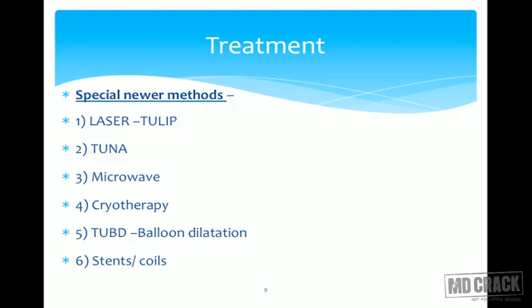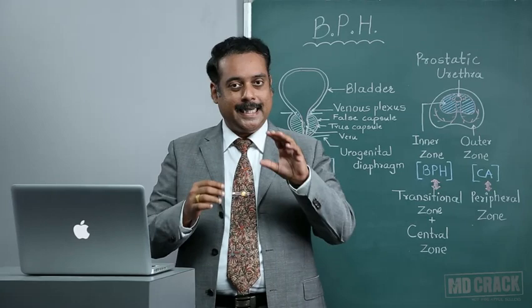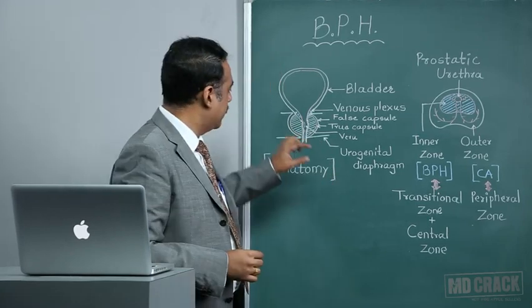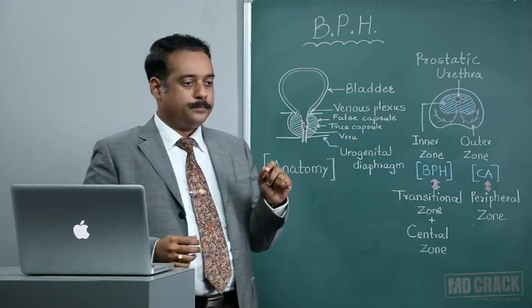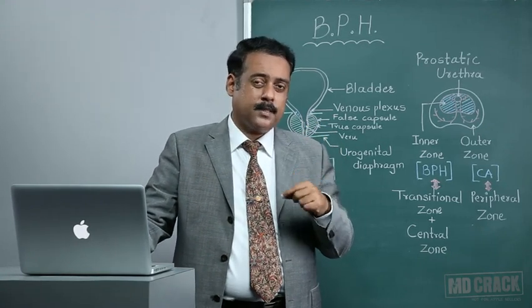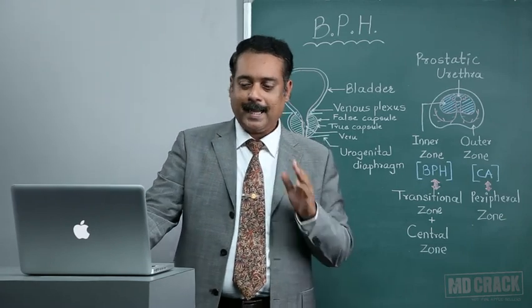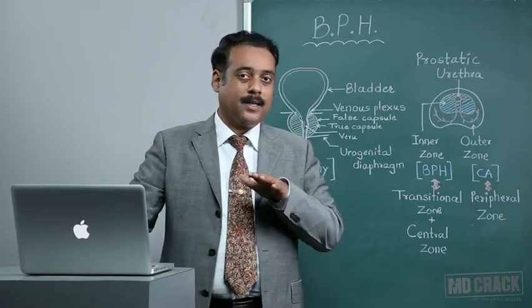Lastly, for patients who are unfit for surgery — patients who are bedridden in ICU or debilitated and cannot undergo either endoscopic or open surgery — we do the minimum but aim to produce good results. We use stents or various coils to keep the urethra patent without much resection of the prostate. However, this is a form of palliative treatment and not a definitive treatment.